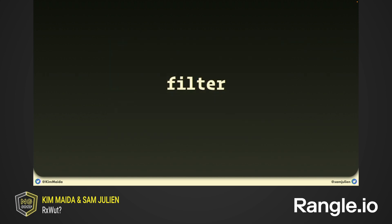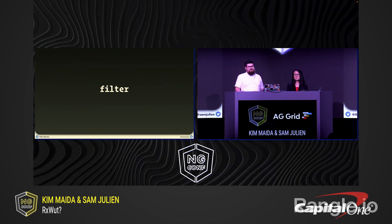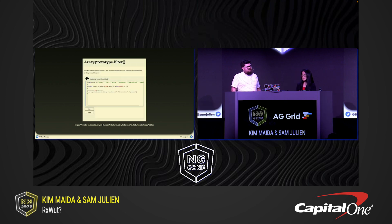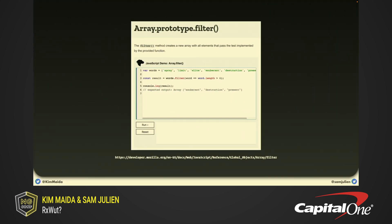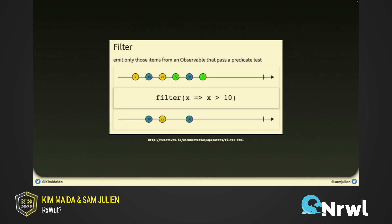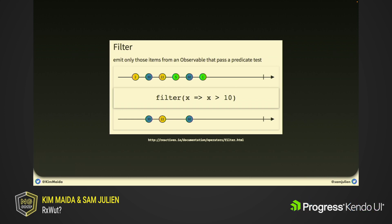Similar to `map`, `filter` is another really common method we use with arrays. The JavaScript array `filter` method creates a new array with all the elements that pass the test implemented by the provided function. And it turns out there's a `filter` operator in RxJS that works basically the same way — it creates a new observable that emits only the items that pass the test in the function, for example only items greater than 10. The main important difference between the operator in RxJS and the array method is that element of time we've been talking about.